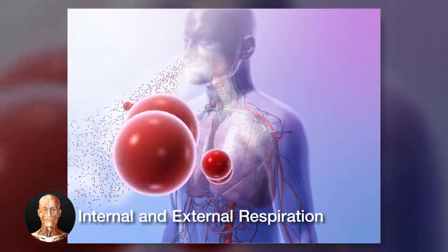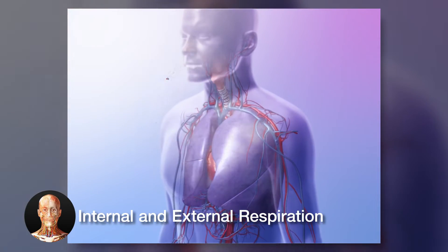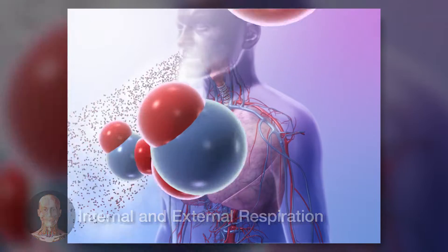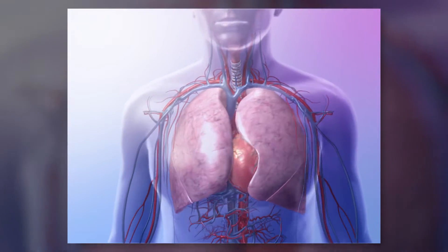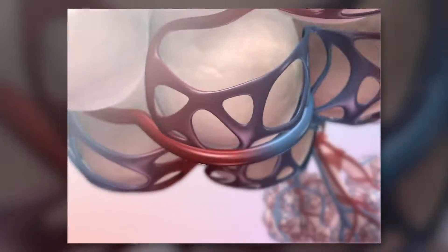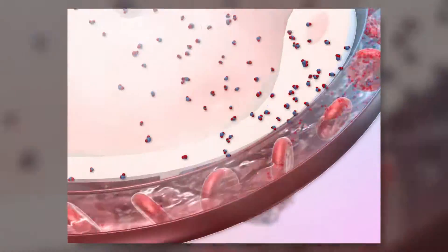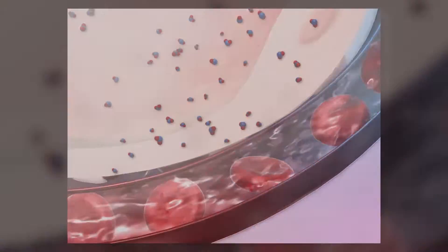The circulatory and respiratory systems ensure that oxygen, which is necessary for cellular respiration, gets to the body's tissues, and carbon dioxide, a waste product of cellular respiration, is released from the body. Internal and external respiration are the two processes that keep all of this running smoothly.